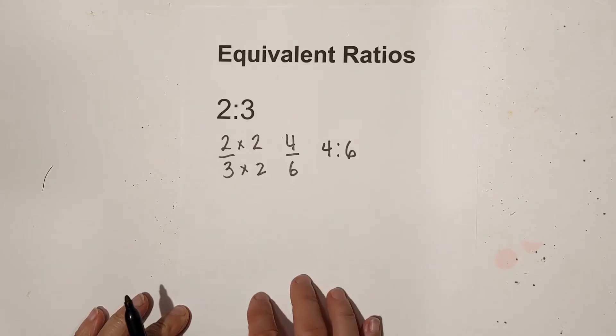So what you can do is we can rewrite this as a fraction and to find equivalent ratios you can either multiply or divide the numerator and denominator of this fraction by the same number. For example we can multiply both of these by 2 and that gives you 4:6 which is an equivalent ratio.